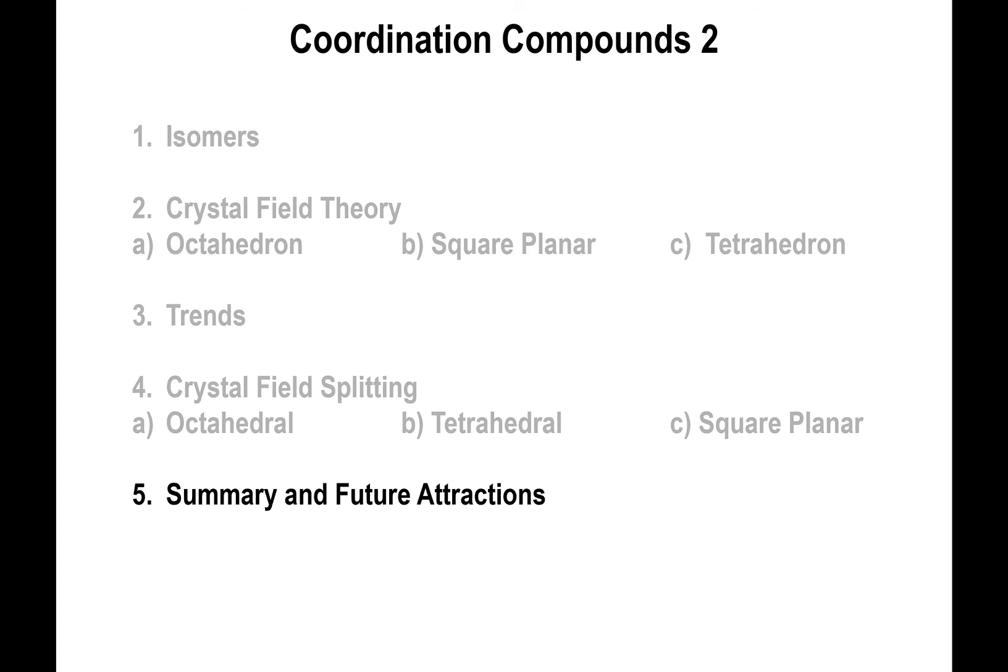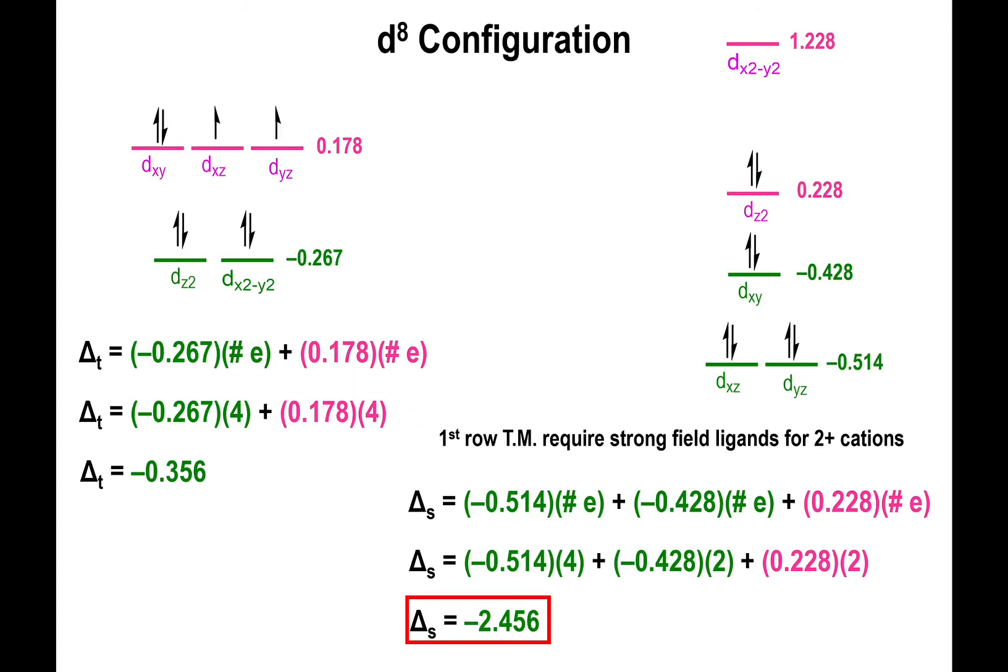One more thing before I end: the reason why for first row transition metals that have a low charge you might end up with tetrahedral as opposed to square planar when you have d8 configuration is because in the square planar configuration, the ligands are 90 degrees apart from each other and the bonds are closer together.